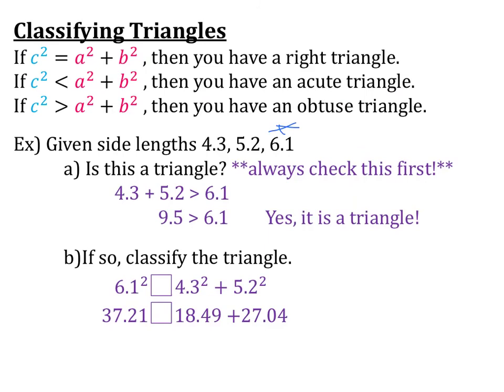When you type this in the calculator, you have 37.21 and then box, 18.49 plus 27.0. When you add that together, you have 37.21 is less than 45.33. So that means our C side, our largest side, is smaller than the other two.